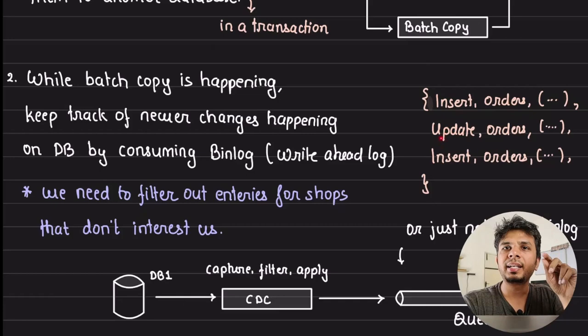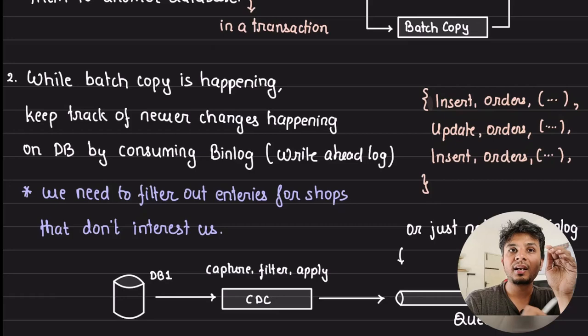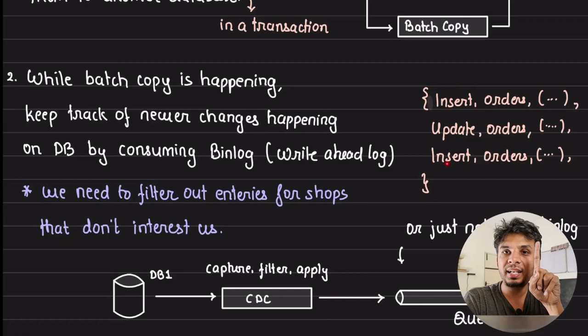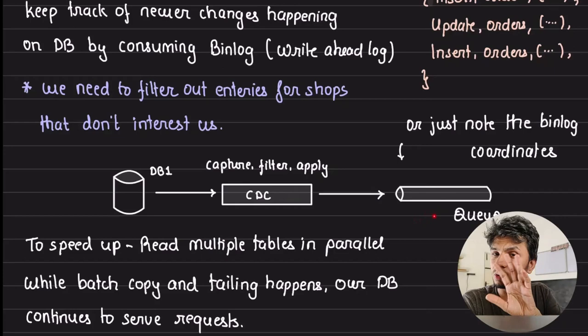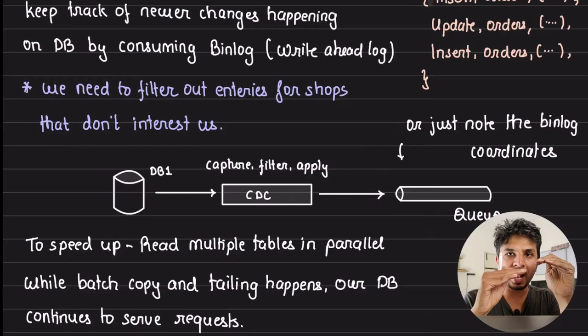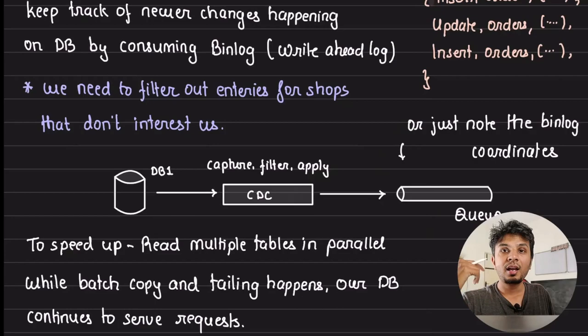MySQL's write-ahead log is called the binlog. You note the binlog coordinates at the time you start copying. All subsequent DB events — inserts, updates — are captured in the binlog and easy to parse. Either stream these events into a queue using CDC, or simply retain the binlog and track coordinates. Multiple threads can be used for the batch copy to improve performance.